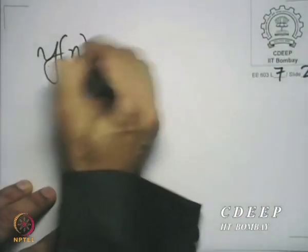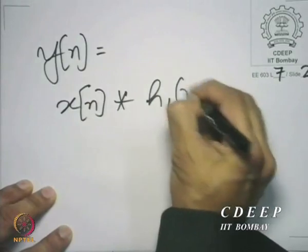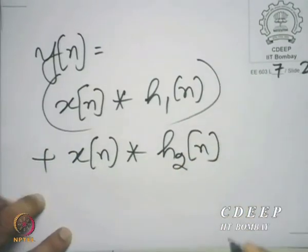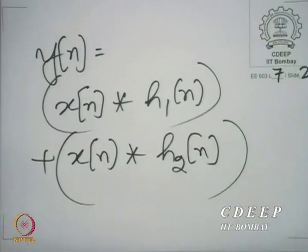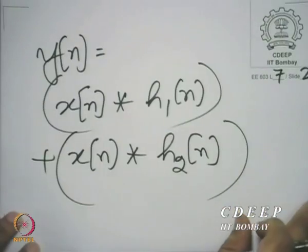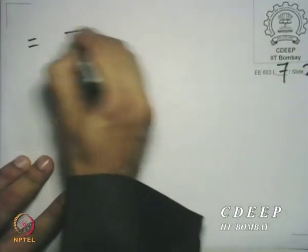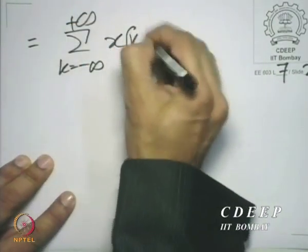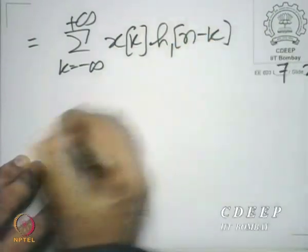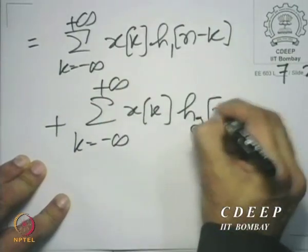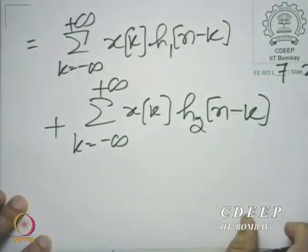It is very easy to see that y(n) is equal to x(n) convolved with h1(n) plus x(n) convolved with h2(n). This can be written as summation over all k of x(k) h1(n minus k) plus summation over k of x(k) h2(n minus k), which is very easy to combine.